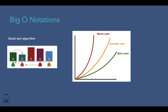In the best case, all elements are equal and we pass through all elements of the array only once. So if the number of elements is n, the time complexity in the best case will be O(n). In the worst case, if we are unlucky and the pivot is repeatedly the biggest number in the array, the time complexity will be O(n²).